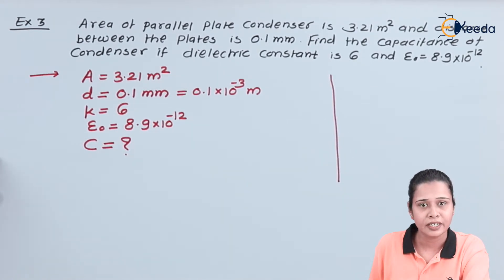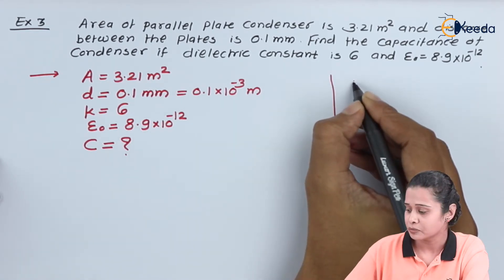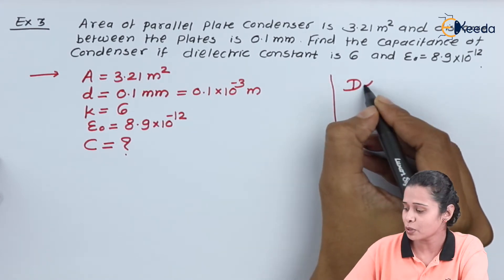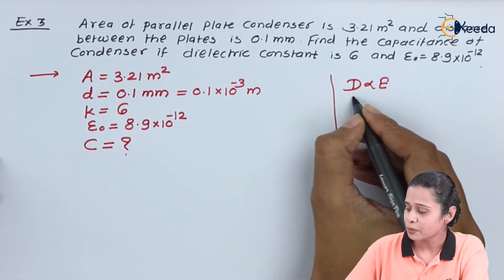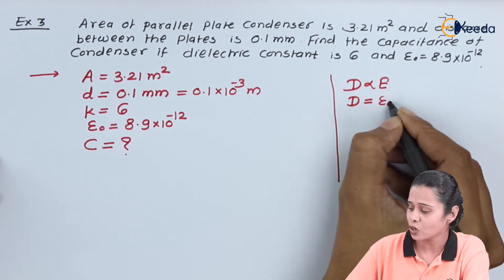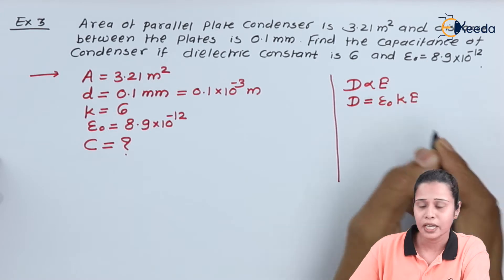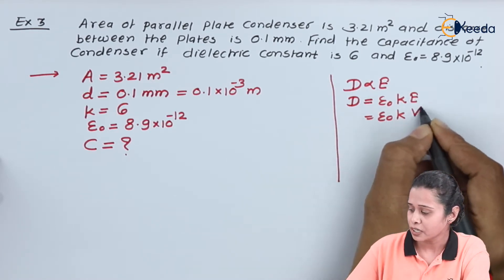Instead of writing direct formula for this, I would like to tell you that D, that is the electric flux density, is directly proportional to the electric field intensity. If we remove the proportionality sign then we have epsilon naught k E. Then the value of this E is nothing but V by d.